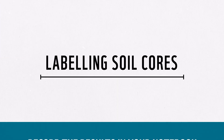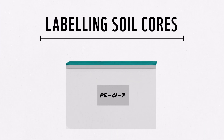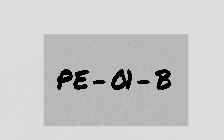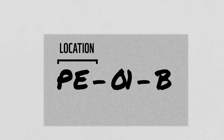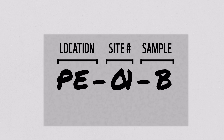Regardless of the number of samples you're taking, we recommend a systematic approach to recording your core IDs. You can come up with your own, but we recommend using a method that identifies the location. In our example, we use PE to note PIOONIC, then the site — in this case it's our first site, 01 — and then the sample. In our case, it's the second sample, B, from our first site, 01, in PIOONIC.